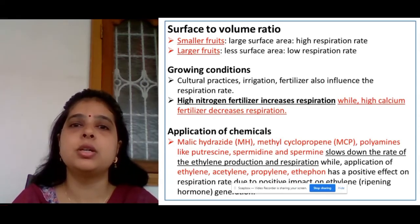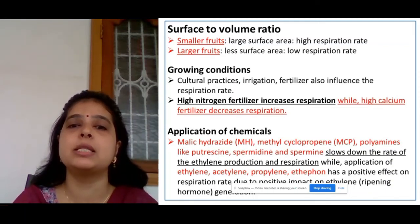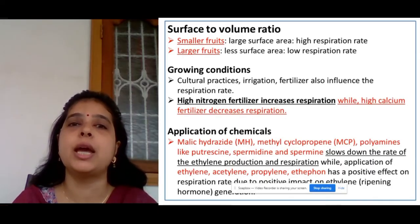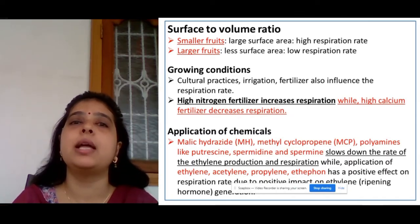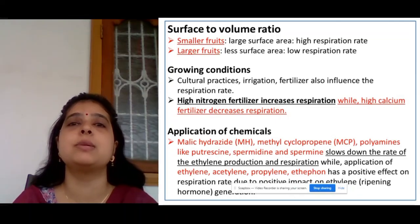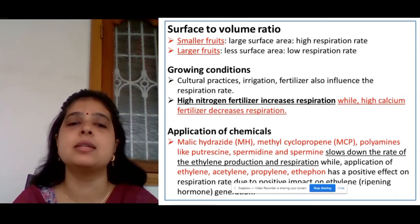The next factor is the application of chemicals. When you apply chemicals like maleic hydrazide, methyl cyclopropene (1-MCP), or polyamines such as putrescine, spermidine, and spermine, they slow down the rate of ethylene production and respiration, thereby increasing shelf life. But when you apply chemicals like ethylene, acetylene, propylene, or ethephon, they have a positive effect on respiration rate, meaning the respiration rate is enhanced.